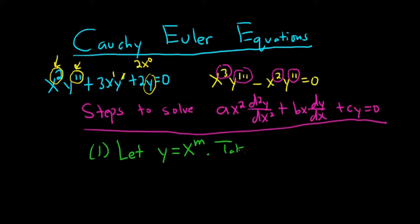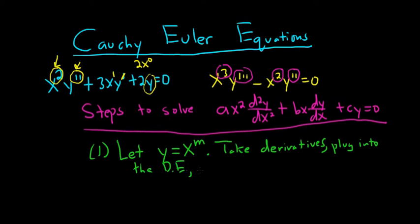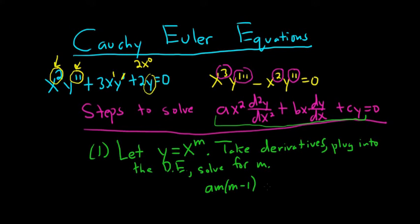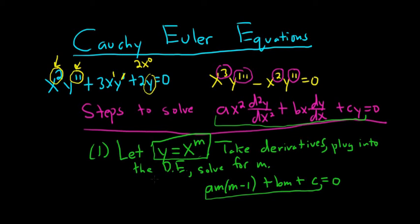Then you take derivatives — differentiate as many times as needed — and plug into the differential equation, then solve for m. In this specific example you take the derivative twice, plug it in, and solve for m. If you do that, you end up getting am(m minus 1) plus bm plus c equals 0. This is a quadratic equation that you then solve. Some people memorize this equation, but I like to derive it from scratch each time.